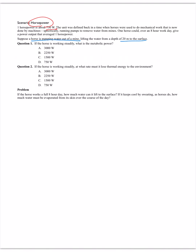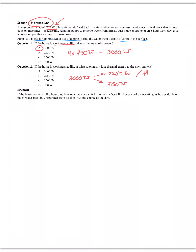The horse is working steadily. The question is: what is the metabolic power? The horse's power output is 750 watts, so the amount of energy the horse has to use is 4 times 750 watts, or 3,000 watts — that's the metabolic power. The horse is burning chemical energy at 3,000 joules per second. 750 joules per second goes to useful work. The remaining 2,250 watts goes to thermal energy.